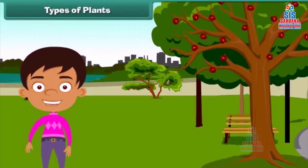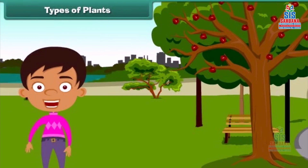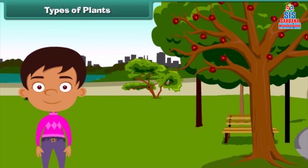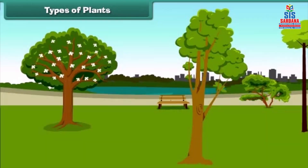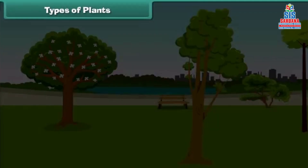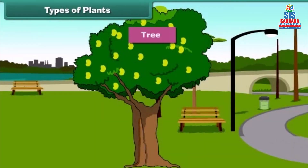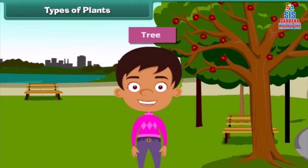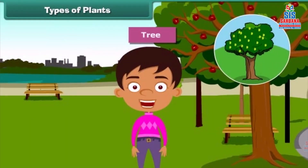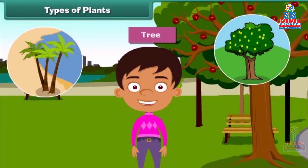Children, we often see different types of plants around us. We find that some plants are tall while some are small. Plants which are very tall and strong are called trees. For example, mango tree, coconut tree, and neem are tall.